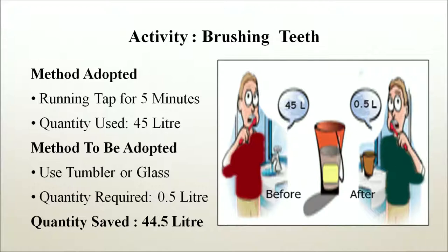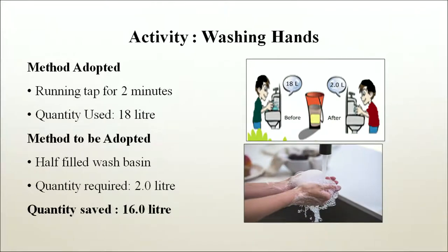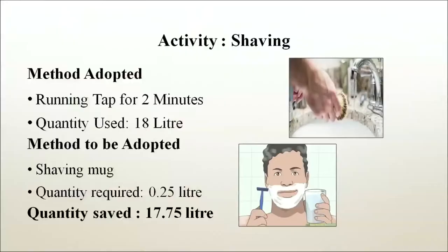For brushing teeth: using a running tap for 5 minutes uses 45 litres, whereas using a tumbler or glass requires only 0.5 litres — saving 44.5 litres. For washing hands: a running tap for 2 minutes uses 18 litres, whereas a half-filled washbasin requires only 2 litres — saving 16 litres. For shaving: a running tap for 2 minutes uses 18 litres, whereas a shaving mug requires only 0.25 litres — saving 17.75 litres.